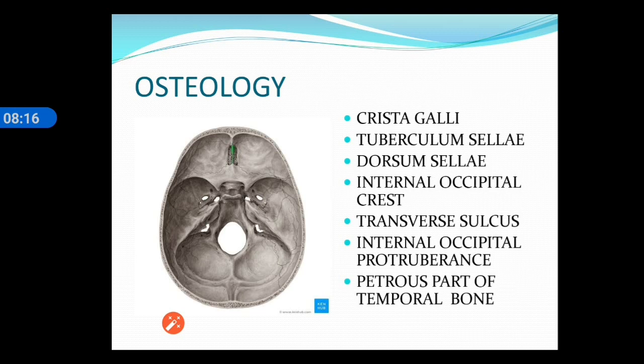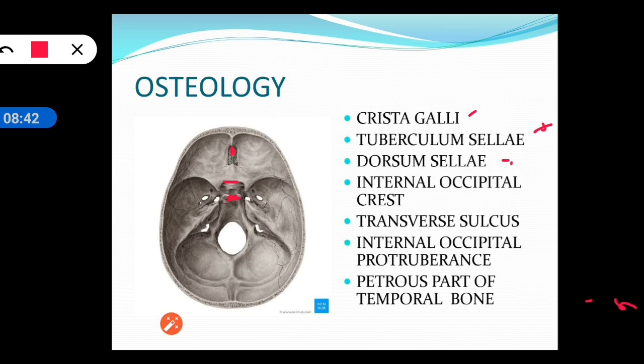To revise the key bony landmarks: the crista galli, the tuberculum sellae, and the dorsum sellae which is present between the posterior clinoid processes. We also have the internal occipital protuberance and the internal occipital crest, which extends from the internal occipital protuberance to the foramen magnum. Other landmarks include the petrous part of the temporal bone, the anterior clinoid process, and the posterior clinoid process.